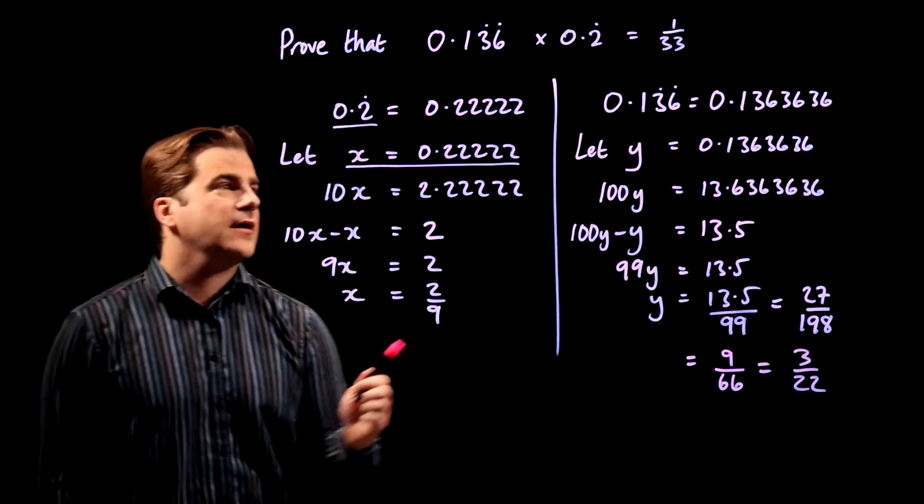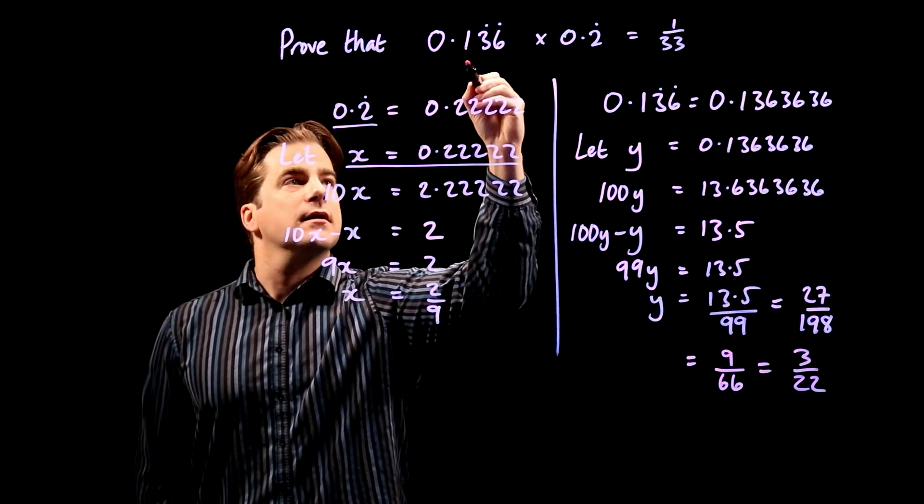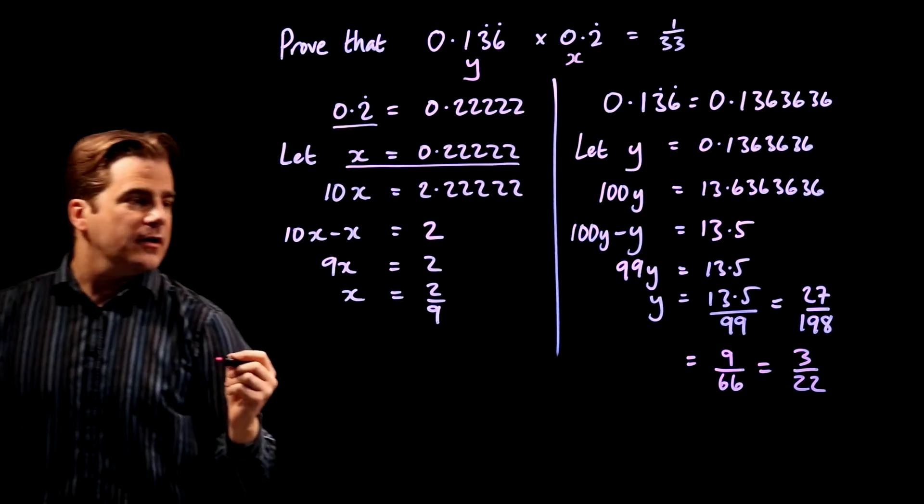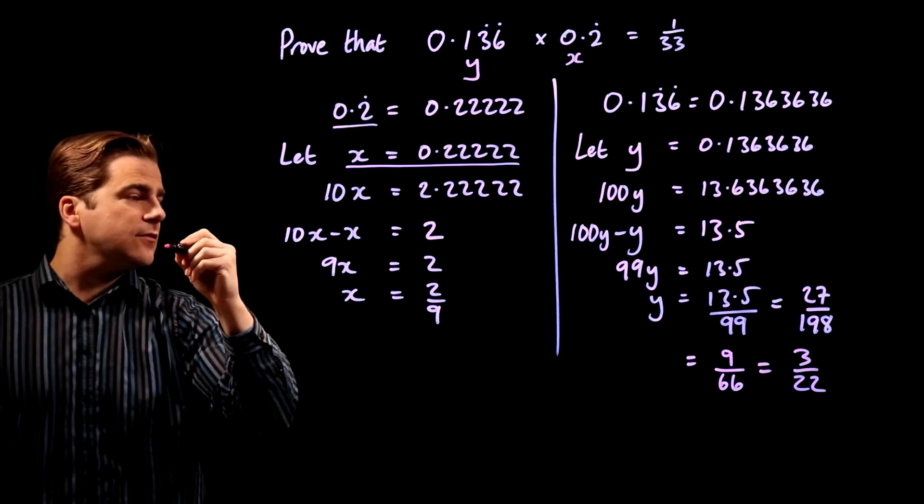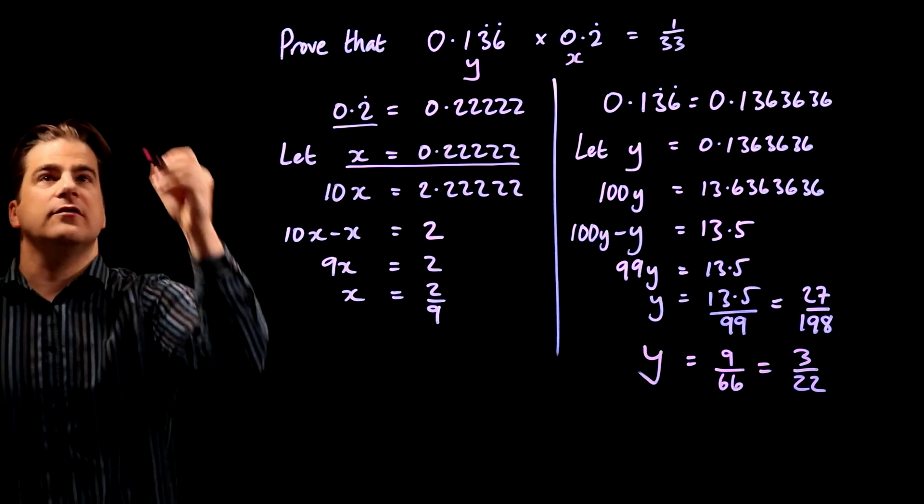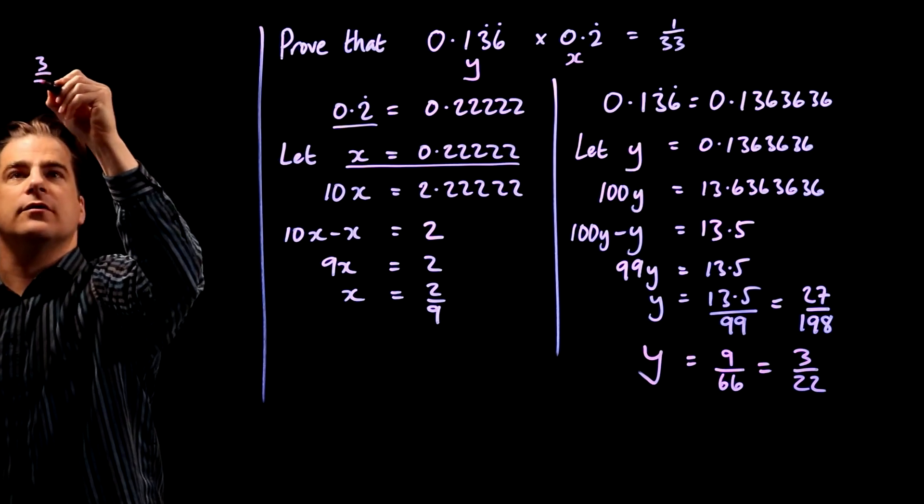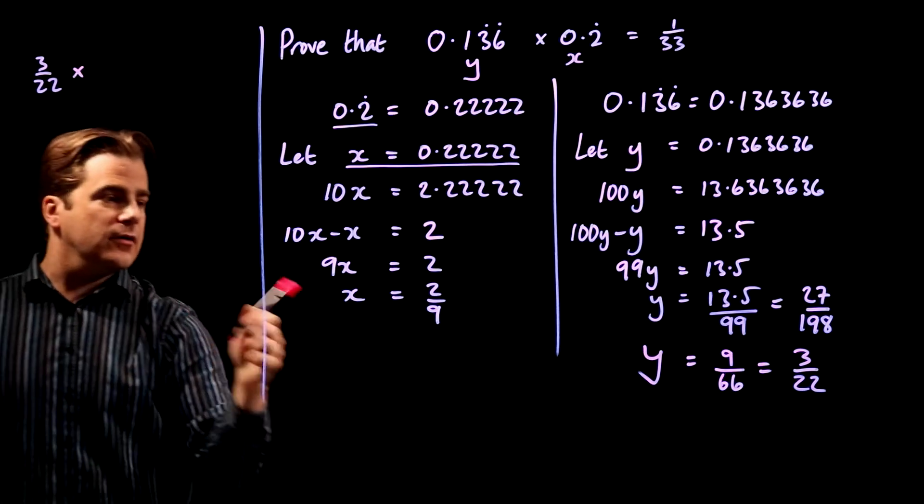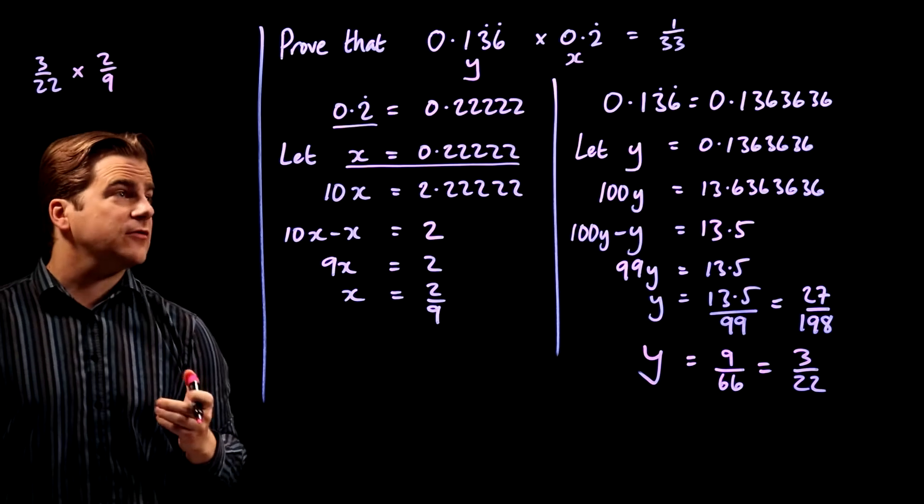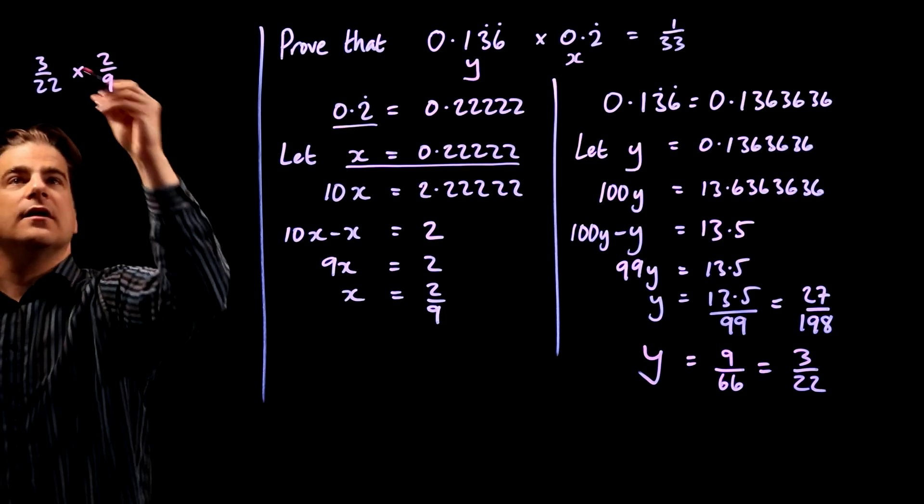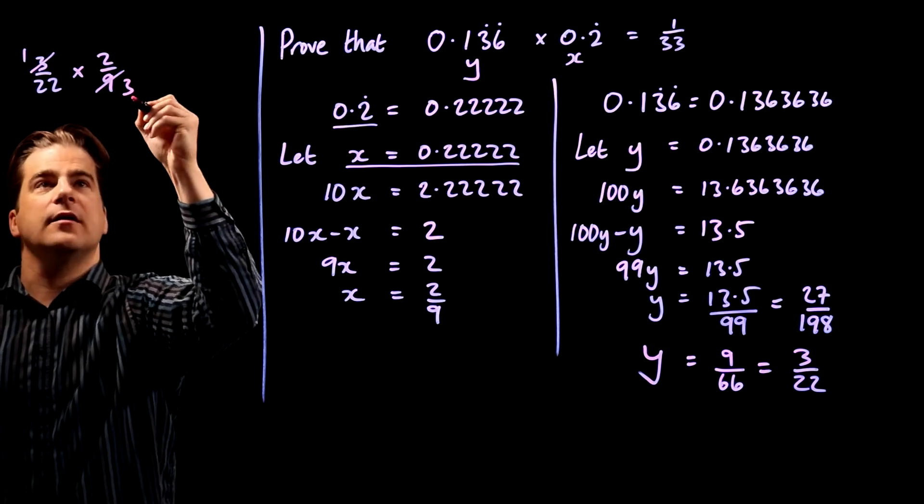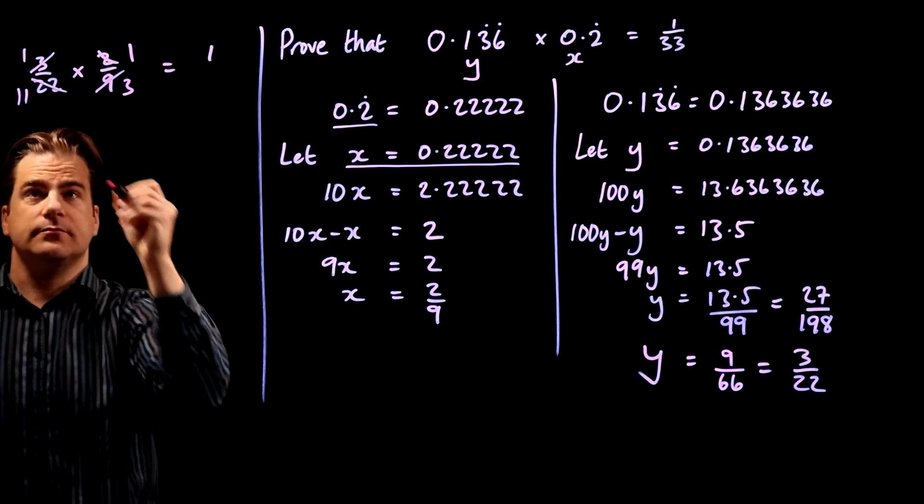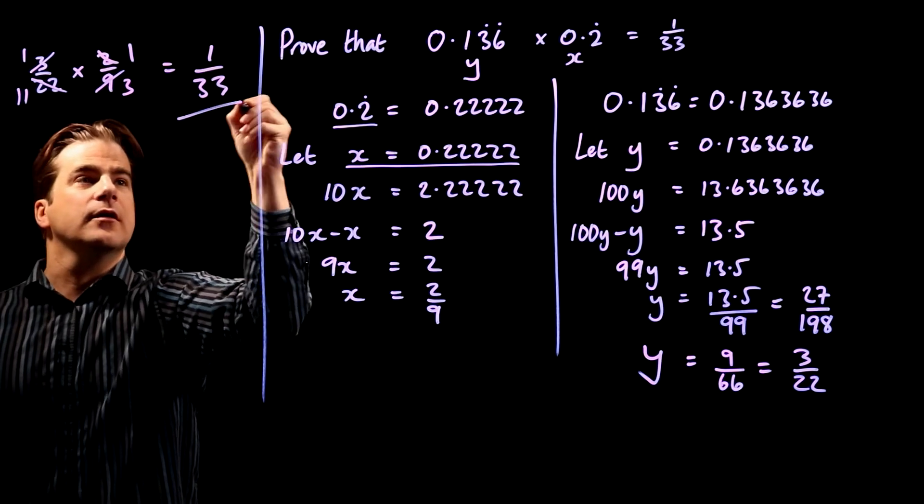So back to the original question. We called that y. We called that x. So it's saying y times x equals 1/33. No problem. So y is 3 over 22. So we've got 3 over 22 times x is 0.2 recurring, which was 2/9. Now, if we've done this correctly, that should turn out to be 1/33. Let's see. 3 into 3 once. 3 into 9, 3 times. 2 into 2 once. 2 into 22, 11 times. 1 times 1 is 1. 11 times 3 is 33. Boom! We've done it.